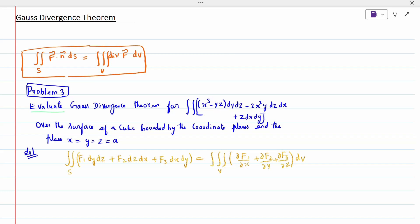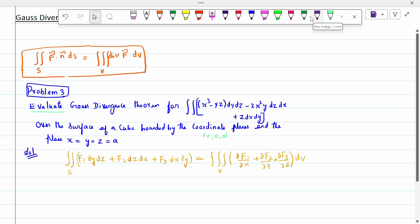Coordinate plane means 0, 0. All lower limits are 0, upper limit a. All the parameters are with respect to a, so the limits are given. The question asks to evaluate only, so how to evaluate? In the question itself it is given to evaluate.